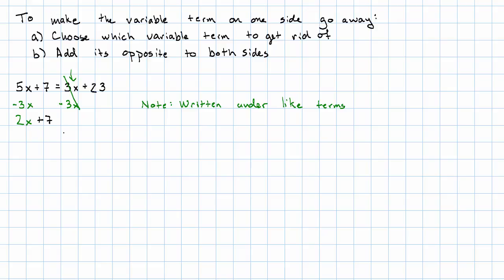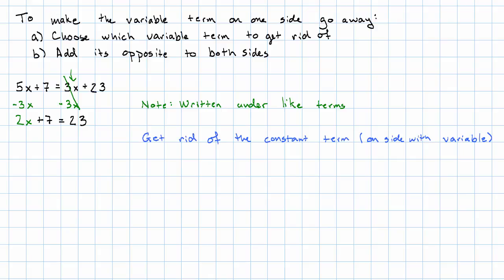5x plus negative 3x is 2x. On the left I have 2x plus 7. On the right, all that's left is 23. And now this is the kind of equation I've been solving up till now. Now I'll get rid of the constant term on the left — or in general, I'll get rid of the constant term on the side with the variable. In this case, adding negative 7 to both sides.